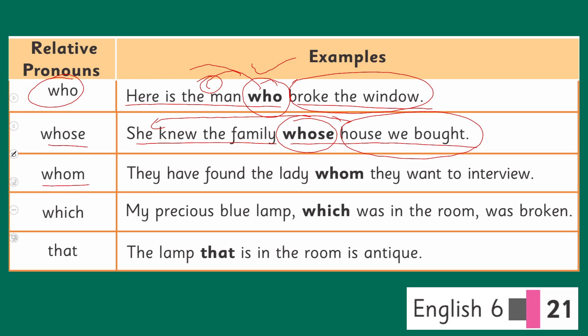With the relative pronoun 'whom,' let's look at the example: 'They have found the lady whom they want to interview.' Here, 'whom' is referring to 'the lady' which we are talking about in the sentence — it is relating back to her.